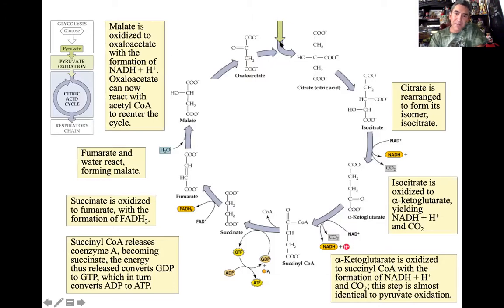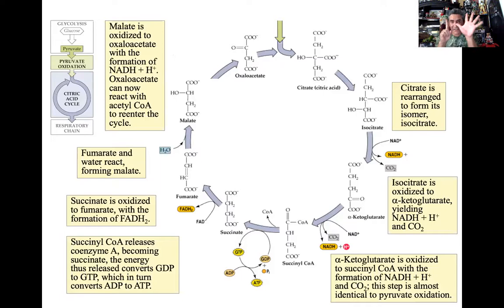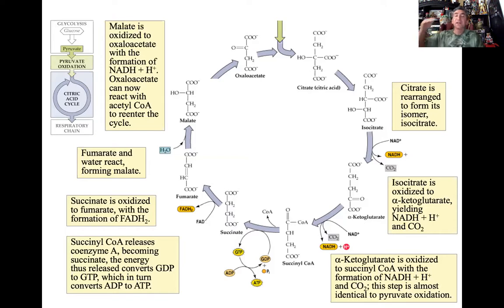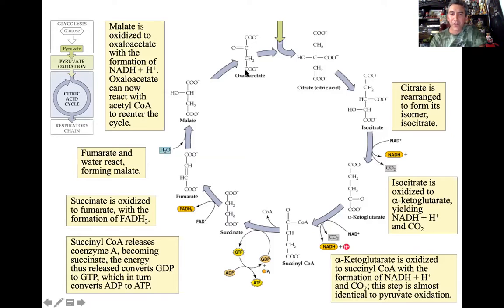We start with the first molecule, which we call citric acid — that's why it's called the citric acid cycle. We start with four carbons here. Going back: in glycolysis we started with six carbons in glucose, broke that in half to get two three-carbon molecules, then in pyruvate oxidation broke off one carbon from each, giving us two two-carbon acetyl-CoA molecules. But now we go back to six carbons — the two carbons from acetyl-CoA connect with the four carbons from oxaloacetate to give us citrate, or citric acid.